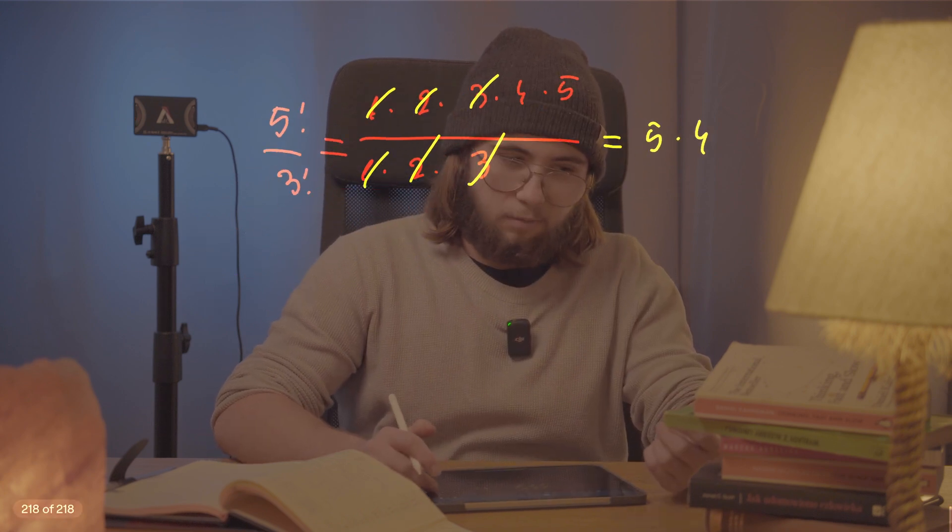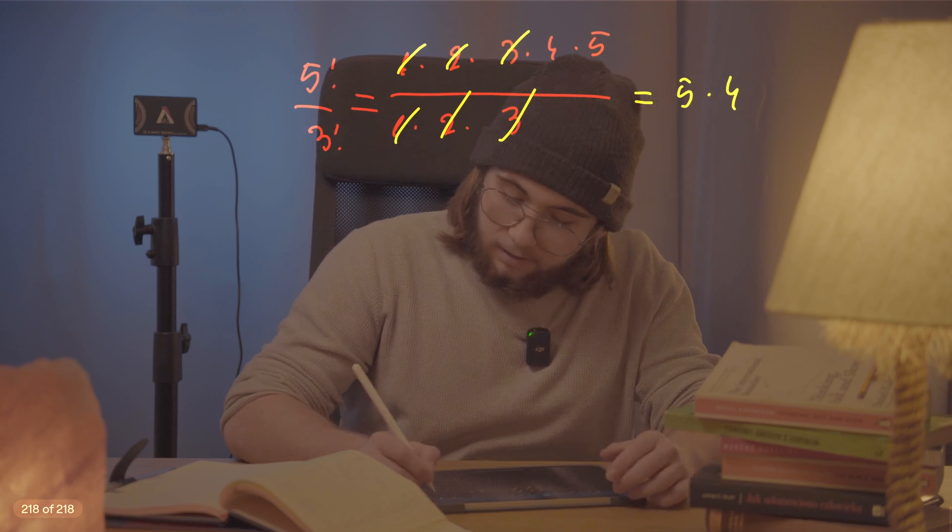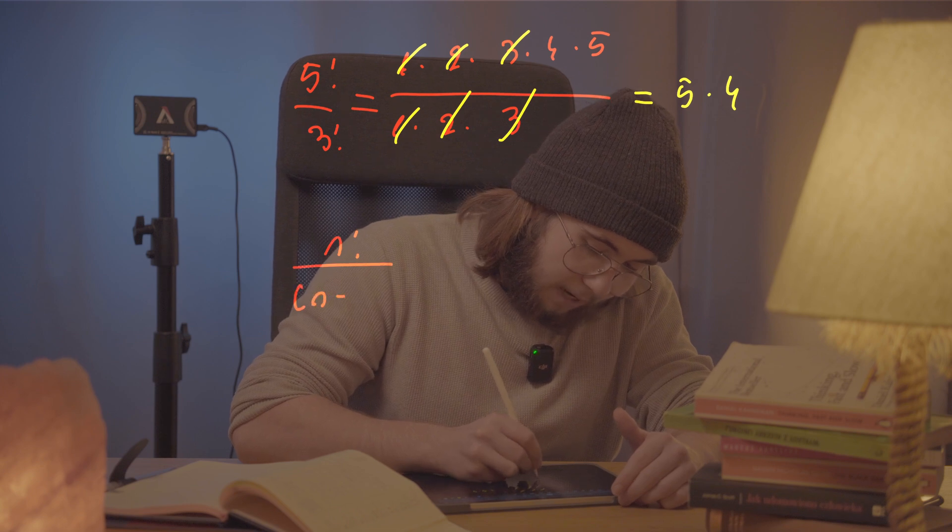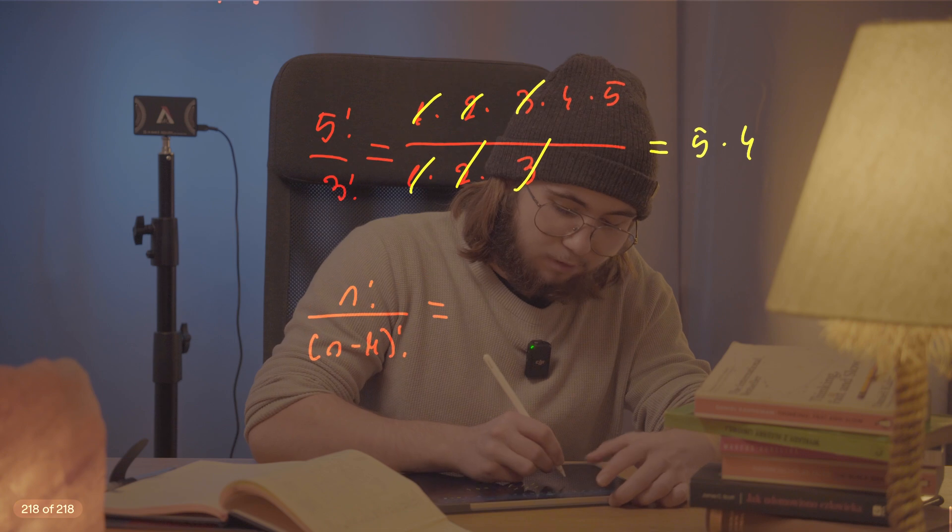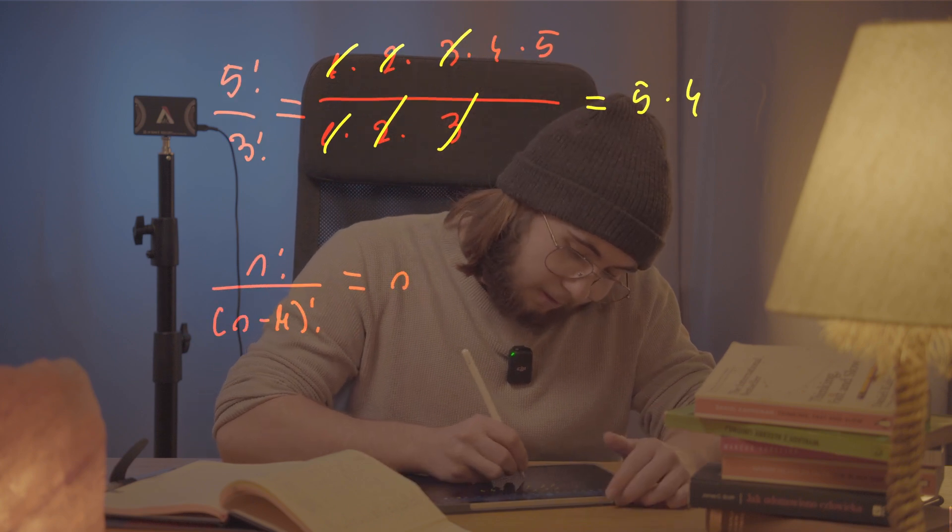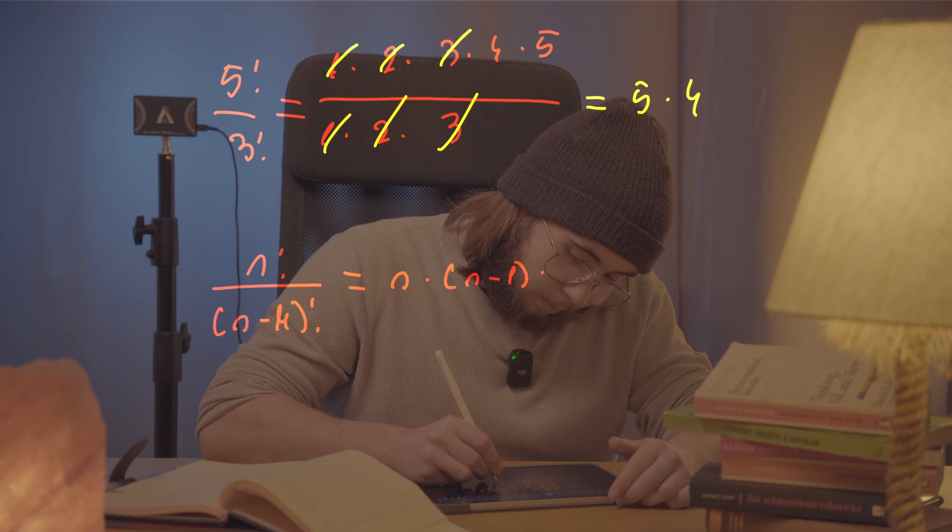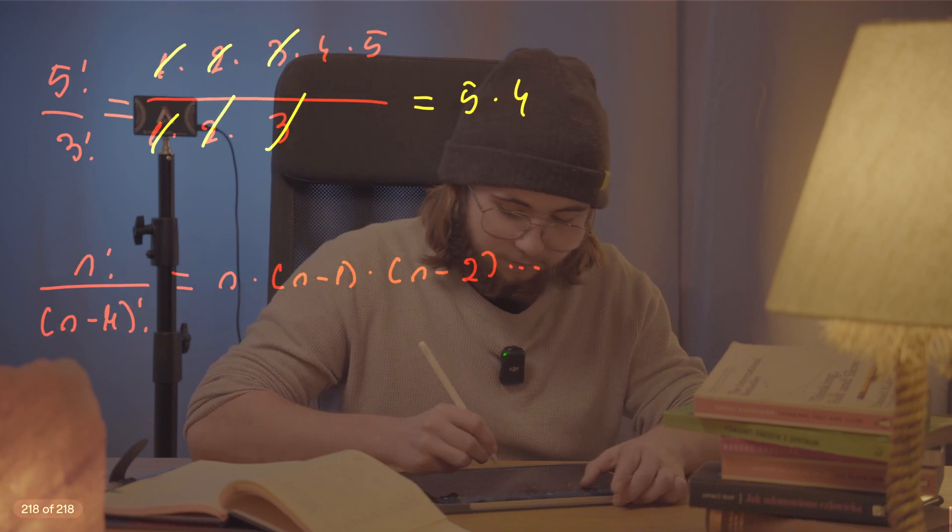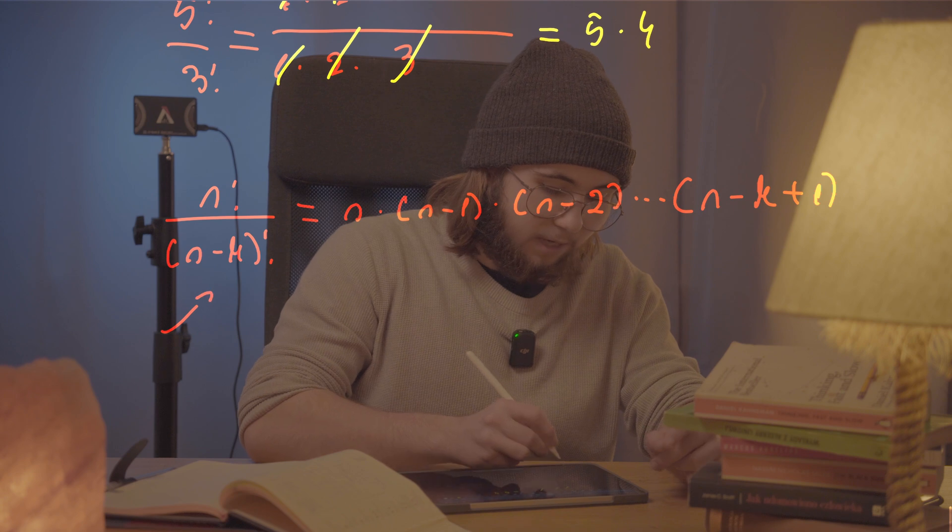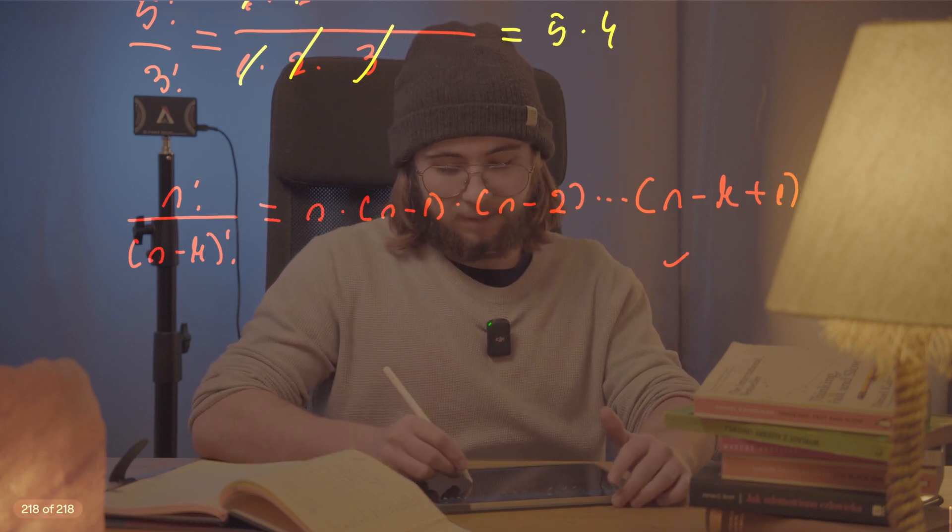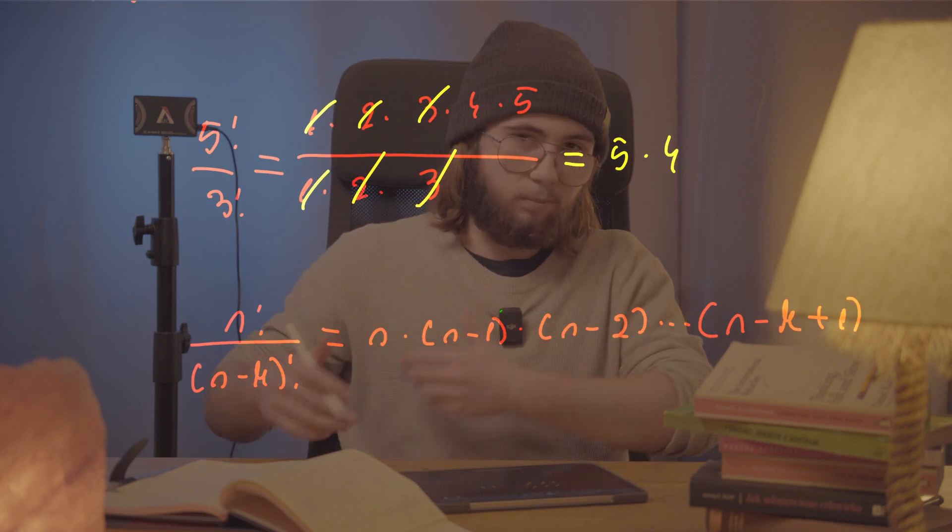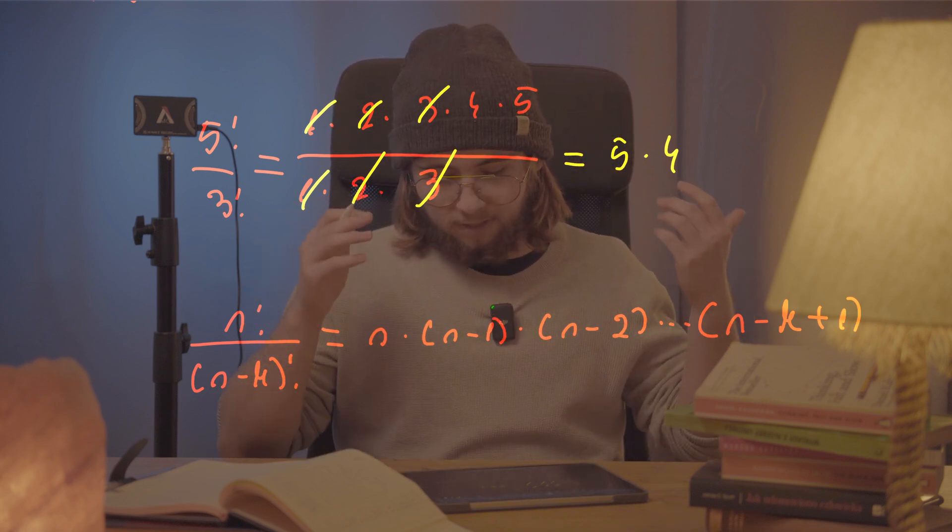I can generalize this thing to saying that whenever I'm dividing factorials, so let's say n factorial by n minus k factorial. So in this case, it was five factorial by five minus two factorial. What I will get is just n multiplied by n minus one multiplied by n minus two. I'm going to be multiplying those parentheses expressions up until I get to n minus k plus one, because I'm dividing n minus k as well. So I will have to stop at n minus k plus one. And in this case, I did stop at n minus k plus one. Five minus two plus one is four. So five times four. Everything holds perfectly.